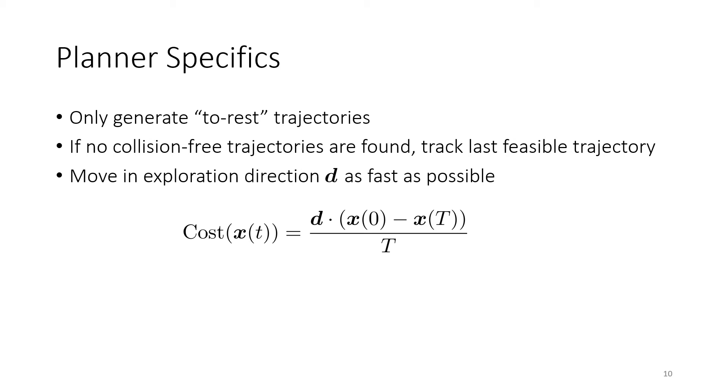Specifically, we want to move the vehicle as fast as possible in some exploration direction denoted by D. So here we're taking the dot product of D with our initial position minus our final position and dividing by the entire duration of the trajectory.